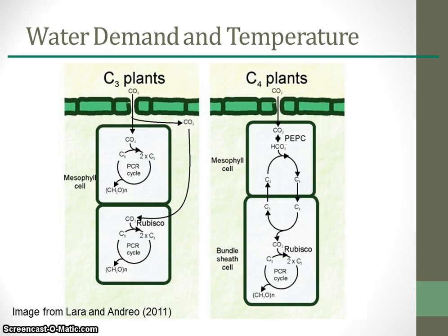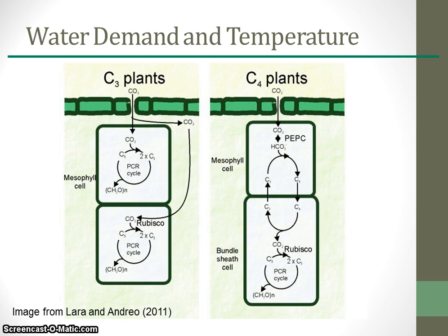In C3 plants, light energy is captured and carbon dioxide is transformed into sugars in the mesophyll cells. In plants adapted to warmer and drier environments, the alternative C4 photosynthetic pathway increases water use efficiency. The C4 pathway spatially separates carbon dioxide fixation, which occurs in the mesophyll cells, and assimilation of carbon dioxide in the Calvin cycle, which is considered a dark reaction and occurs in the bundle sheath cells. For a given degree of stomatal opening and water loss, C4 plants typically fix more carbon, yielding greater water use efficiency.